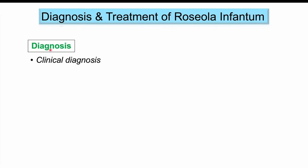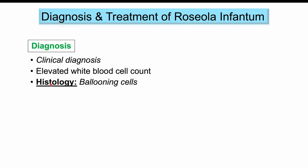Diagnosis is a clinical diagnosis based on history and physical examination. Seeing a 6-to-12-month-old infant with a sudden high fever of 40°C (104°F) lasting three days — with few other symptoms — followed by sudden defervescence and then the onset of a rash is often enough to make the diagnosis. Blood work may show transient elevations in white blood cell count, and tissue analysis can reveal ballooning cells, but generally it remains a clinical diagnosis.